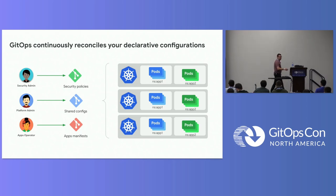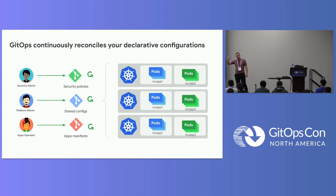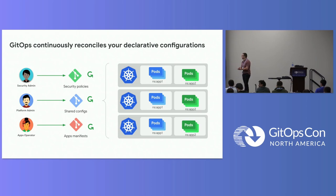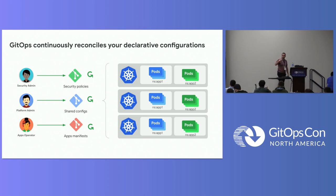With GitOps, the goal is not to have a push mechanism but a pull mechanism. You define the GitOps engine and tool — maybe Argo CD, Flux CD, or in our case Config Sync — pulling different manifests from different repositories. That's the principle of continuous reconciliation in GitOps.